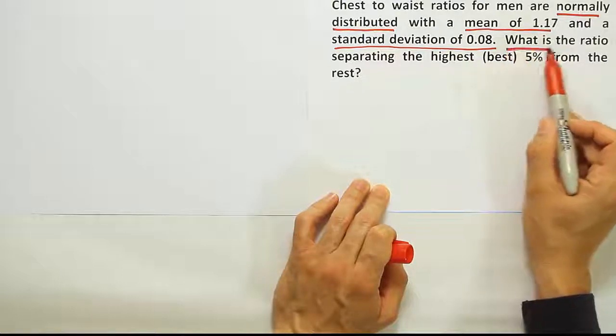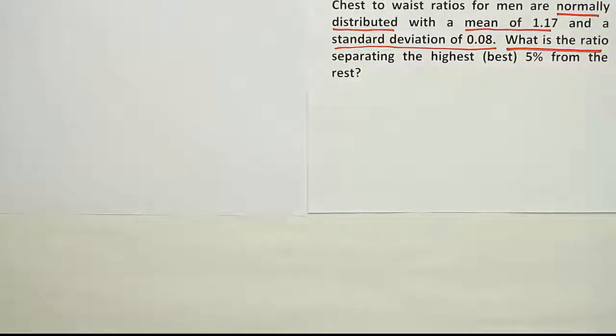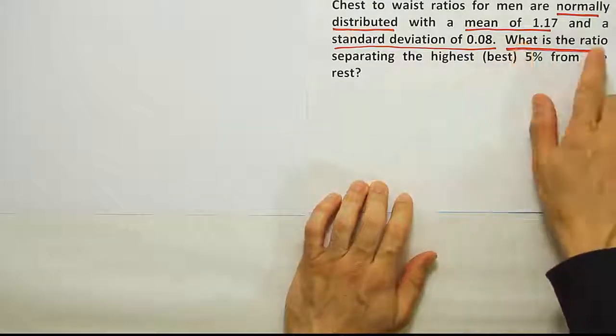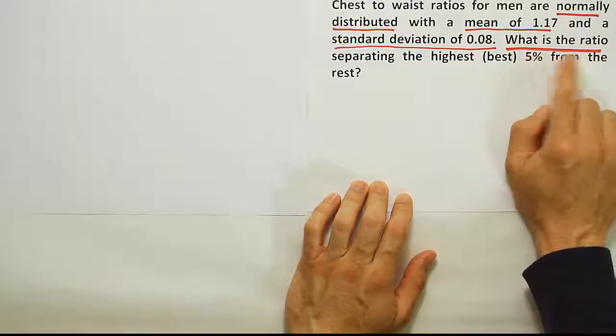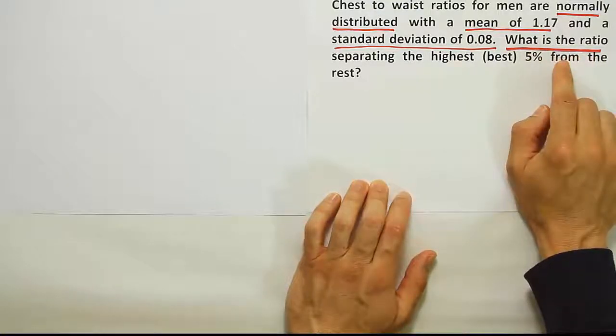What is the ratio? Not what's the probability, what's the ratio? If I see that, then I'm looking for a ratio, a height, a weight, a length, whatever, but not a probability, then I know I'm using the table backwards.